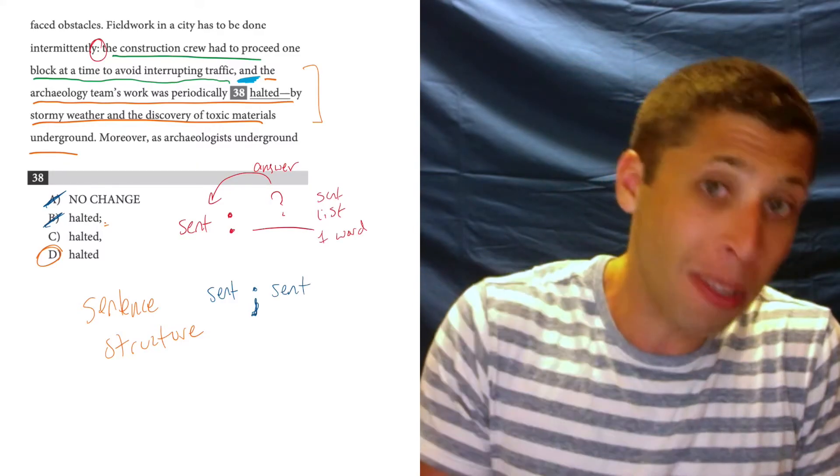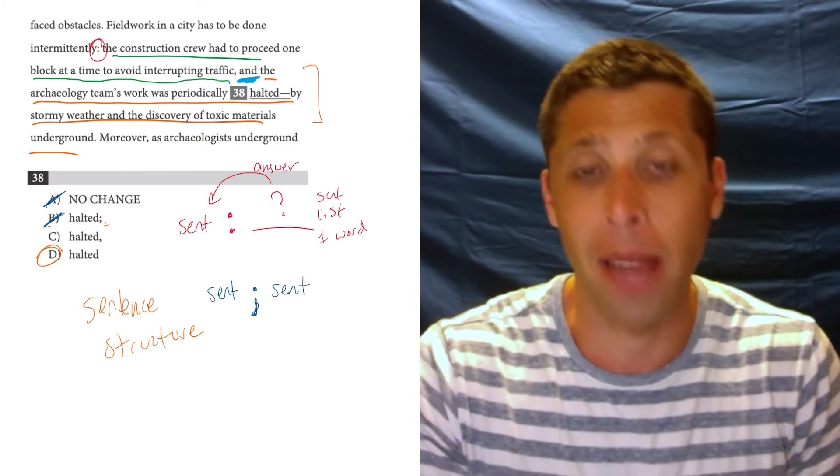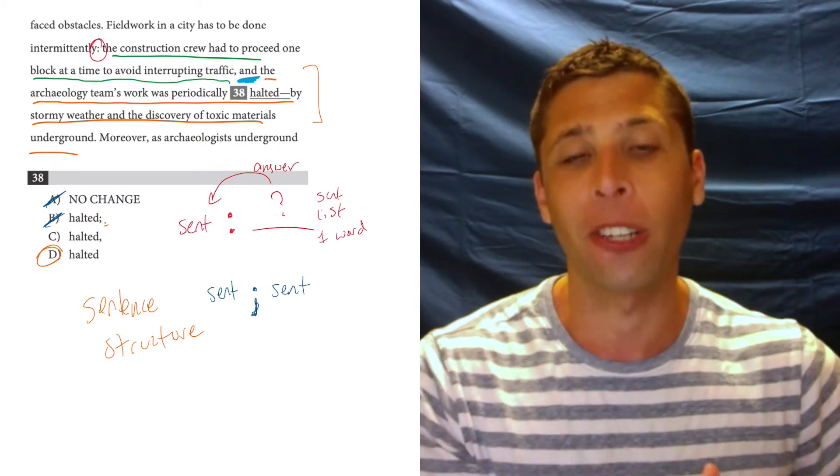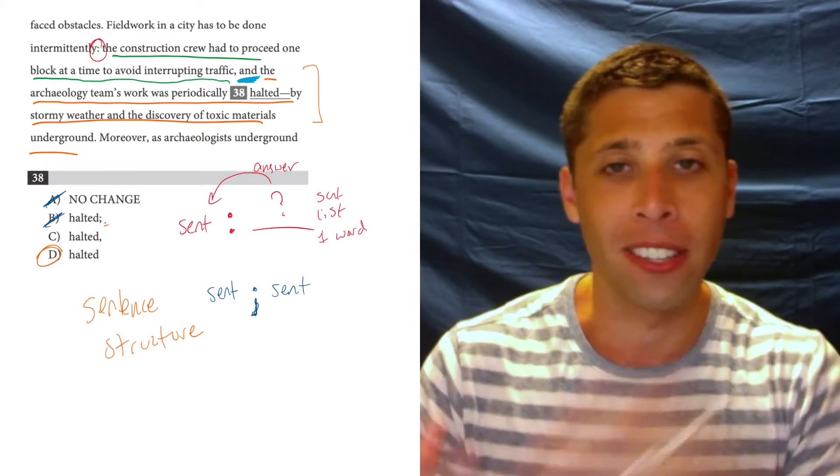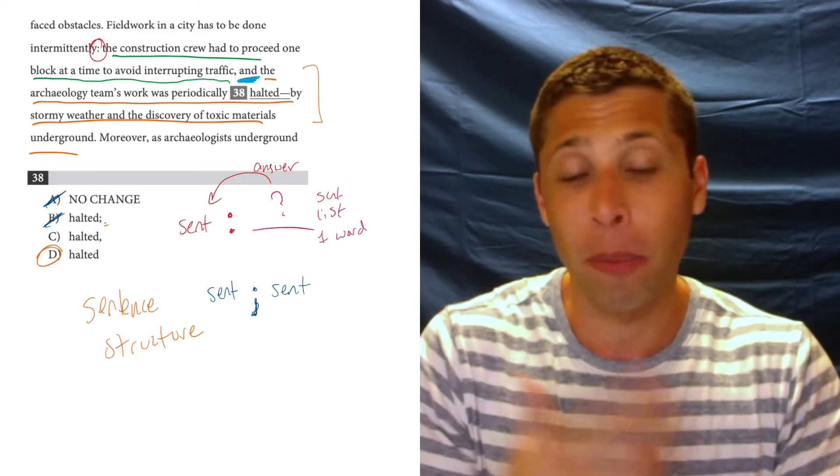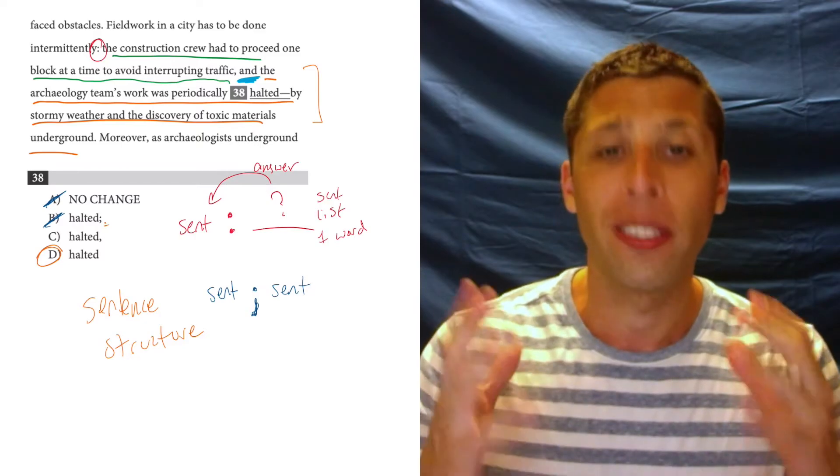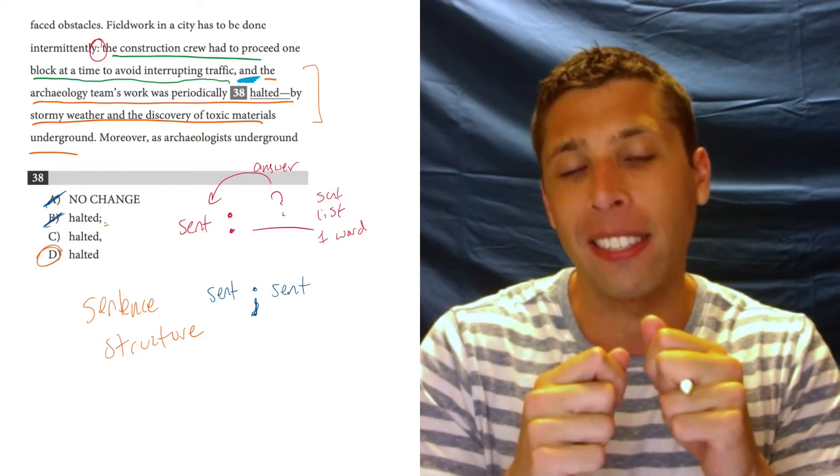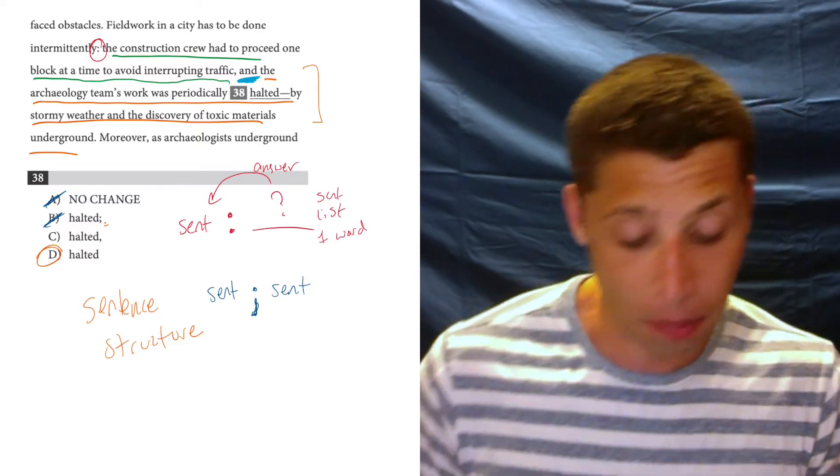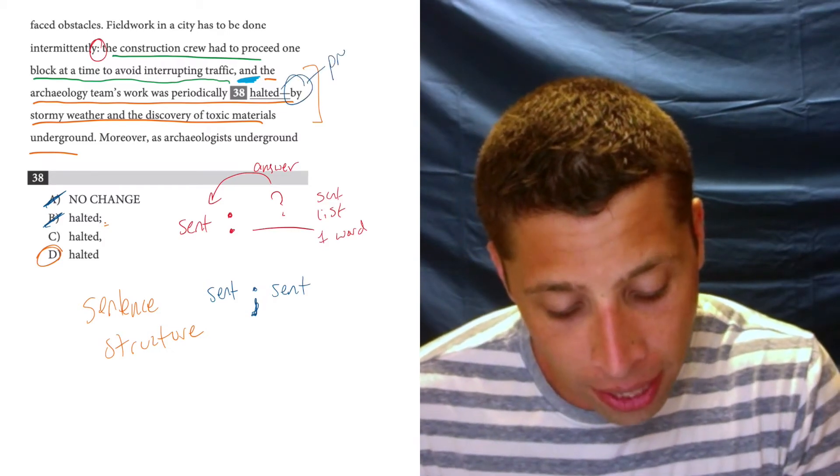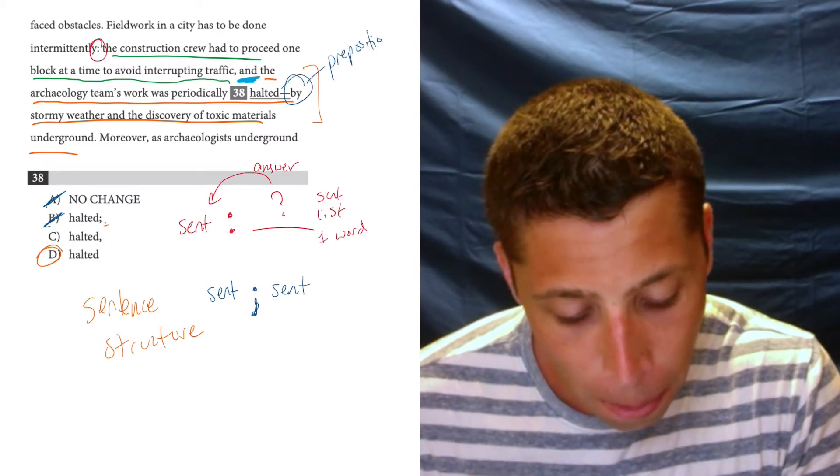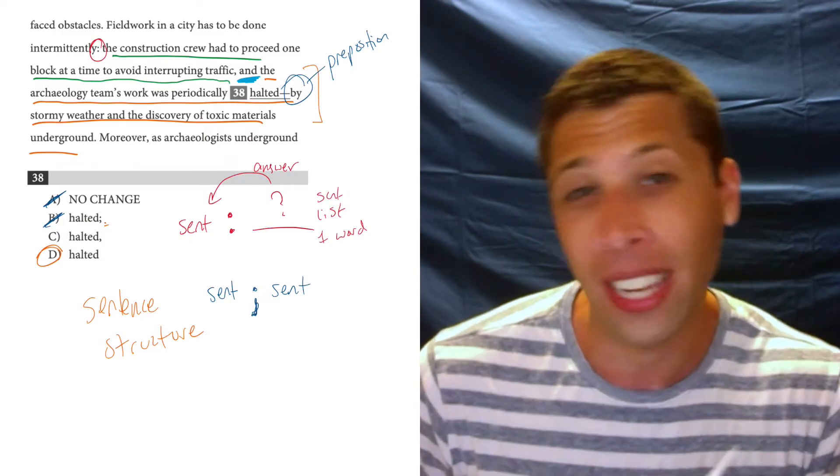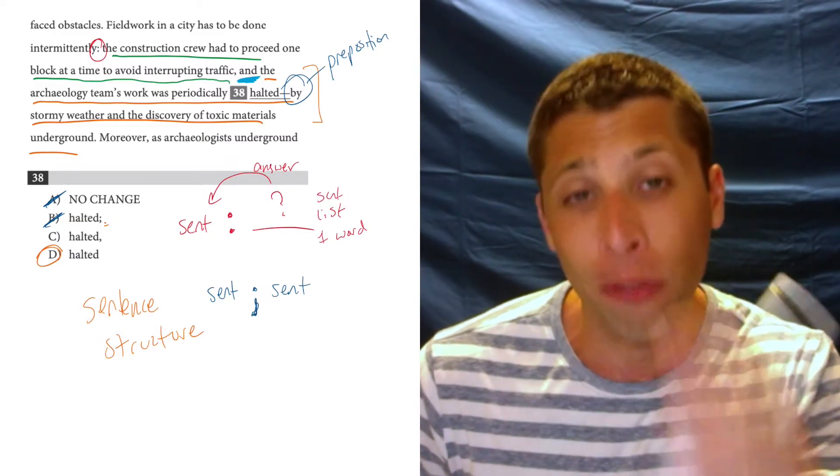But a comma sometimes does this exact thing. A comma sometimes attaches an extra clause to the main clause. And the extra clause is dependent on that main clause. So the comma is our way of connecting them. The reason we don't use a comma here is because of the word by. That is a preposition. Small little words like in, on, for, to,